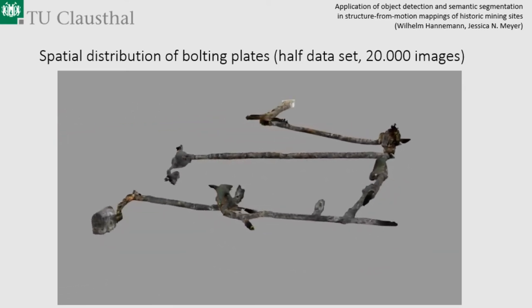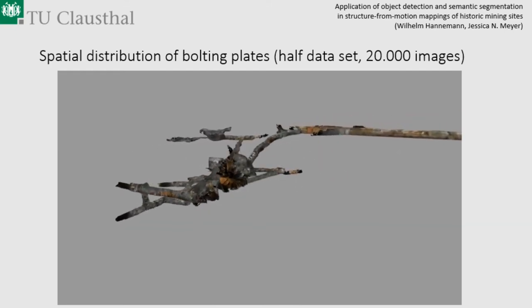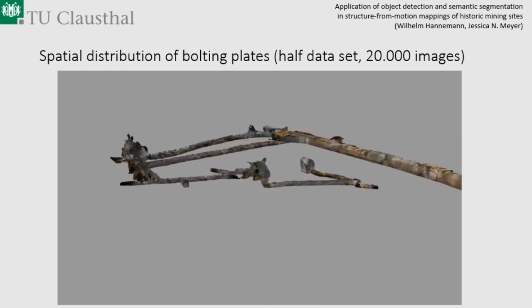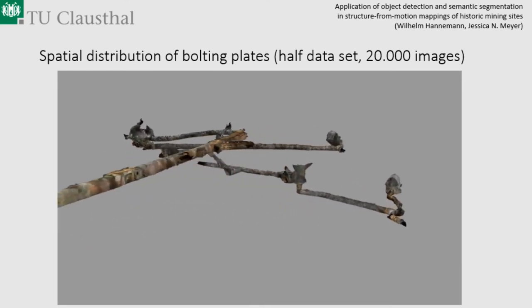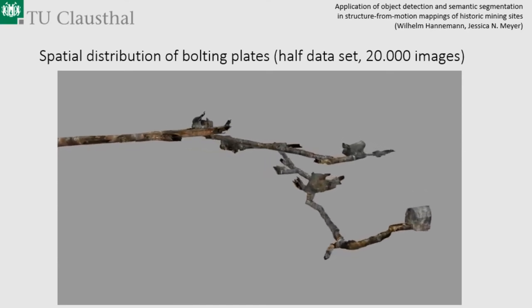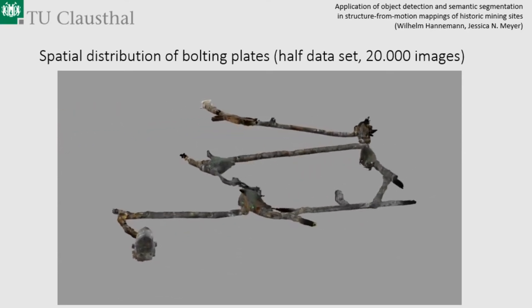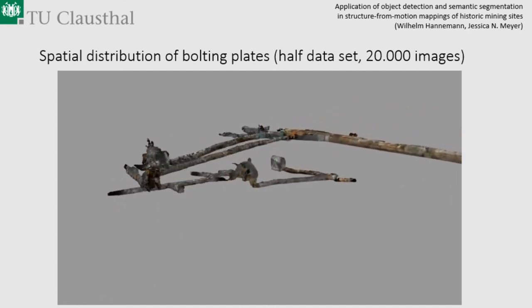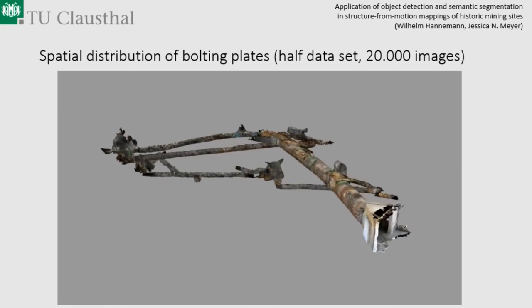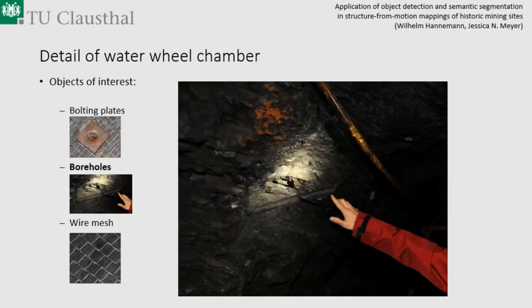Here you see one part of the model consisting of 20,000 images with the green heat map texture applied. There are spots at the chambers showing many bolting plates and some in the tunnels, along with some false detections, but it worked quite nicely. The next step would be to create a training dataset for boreholes and tool marks and retrain a network to detect these in 3D.